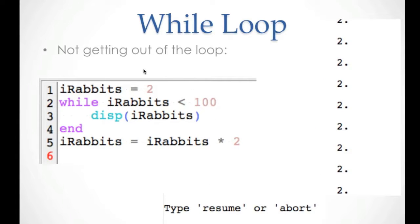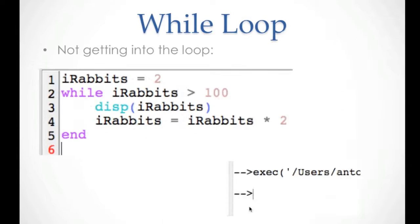We have to be careful about infinite loops. If we initialize irabbits with two and the condition says while two is smaller than 100, but we put the multiplication outside the loop after 'end', we never update irabbits inside the loop, so it will never end. We have to stop it by using Control+C or Command+C and then abort the execution.